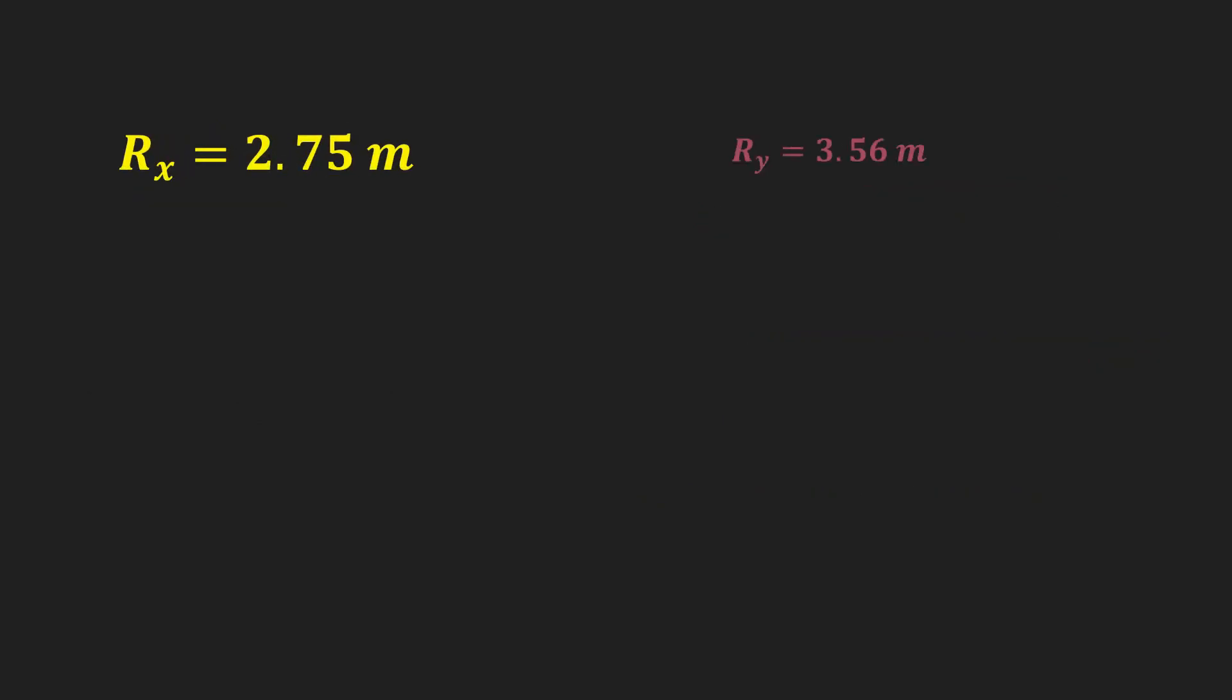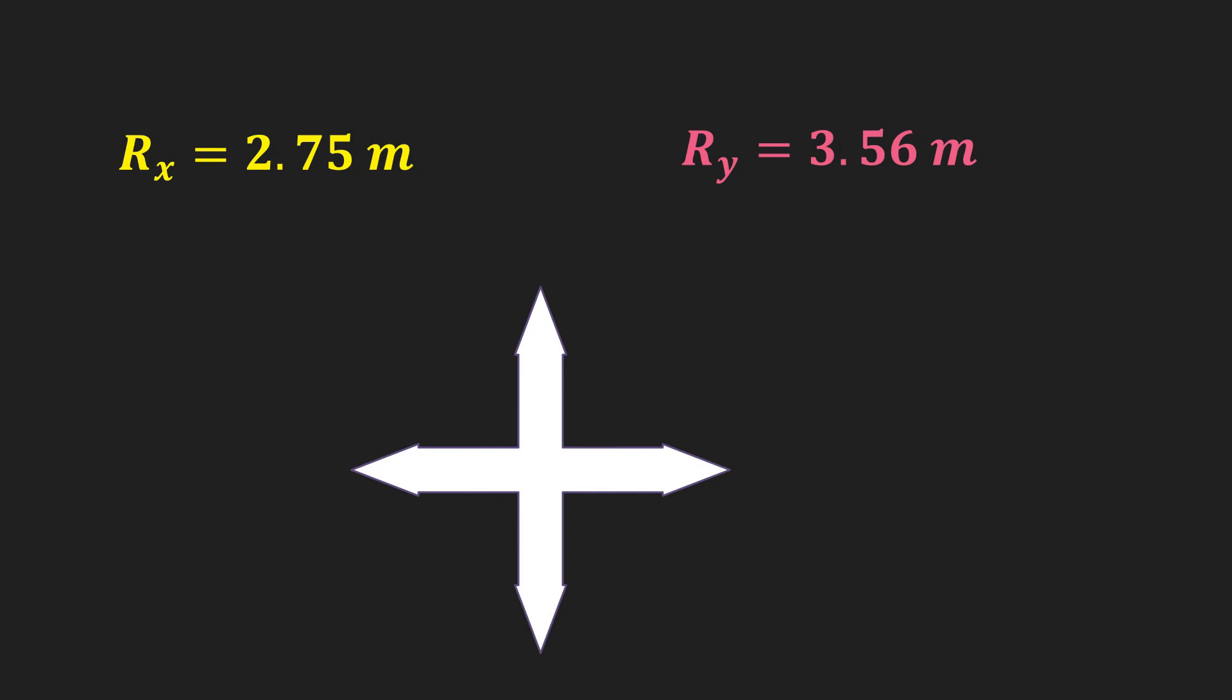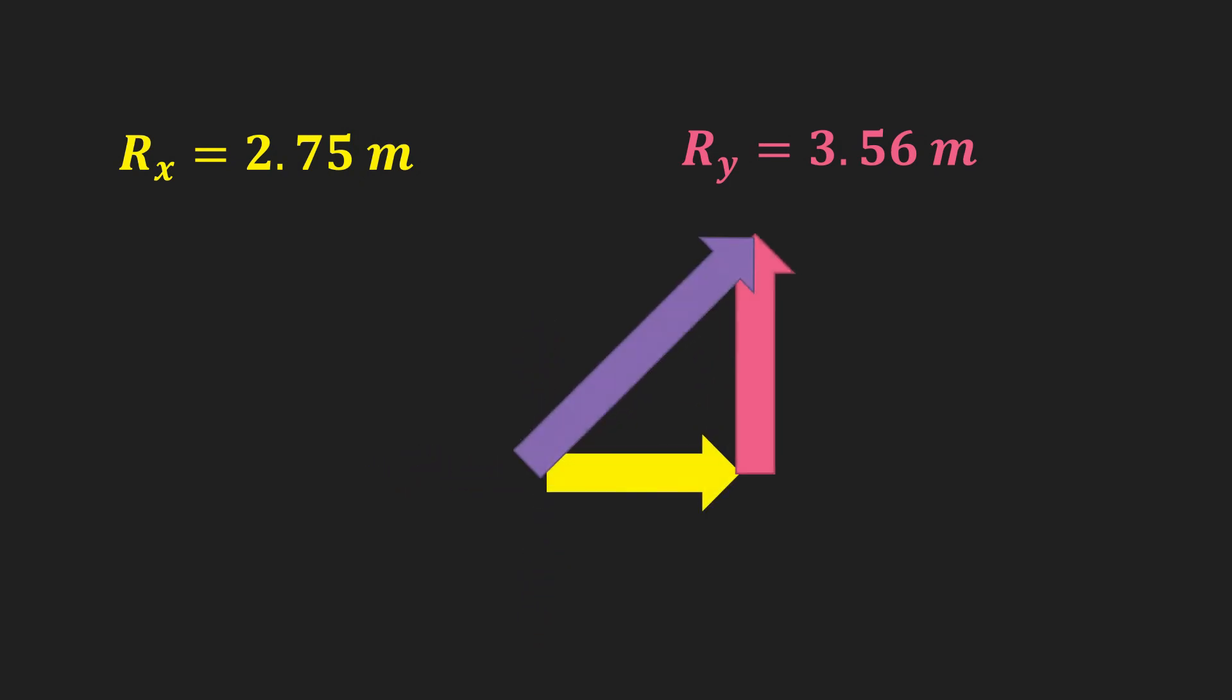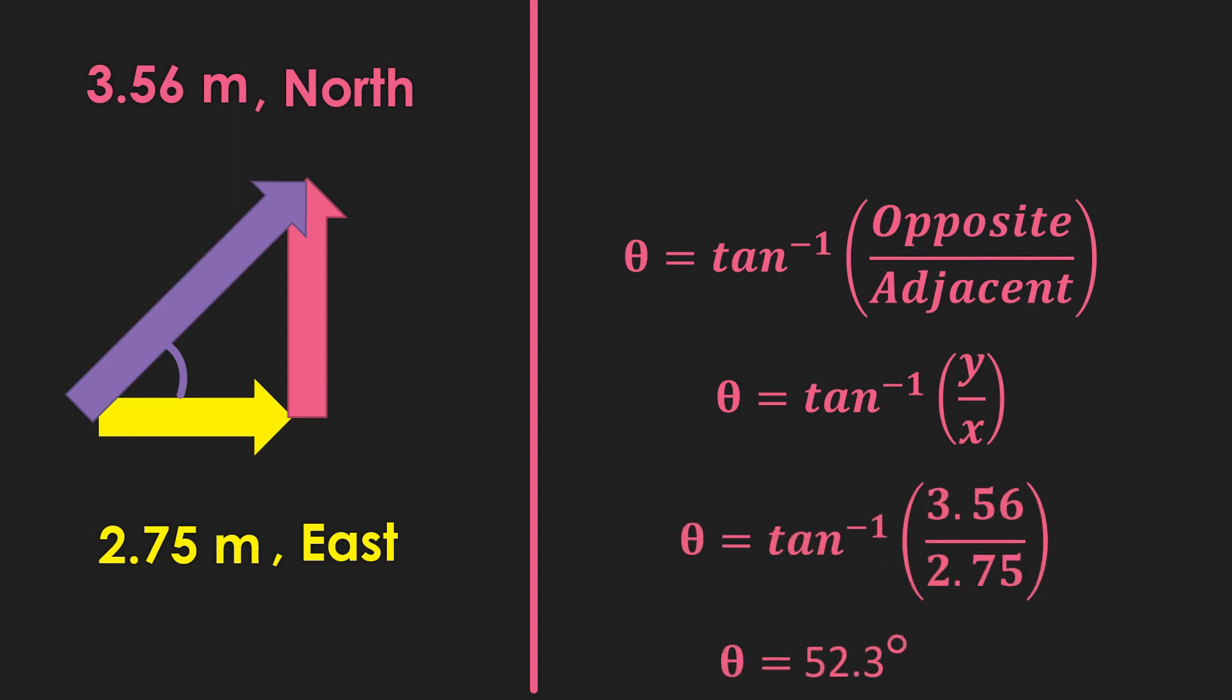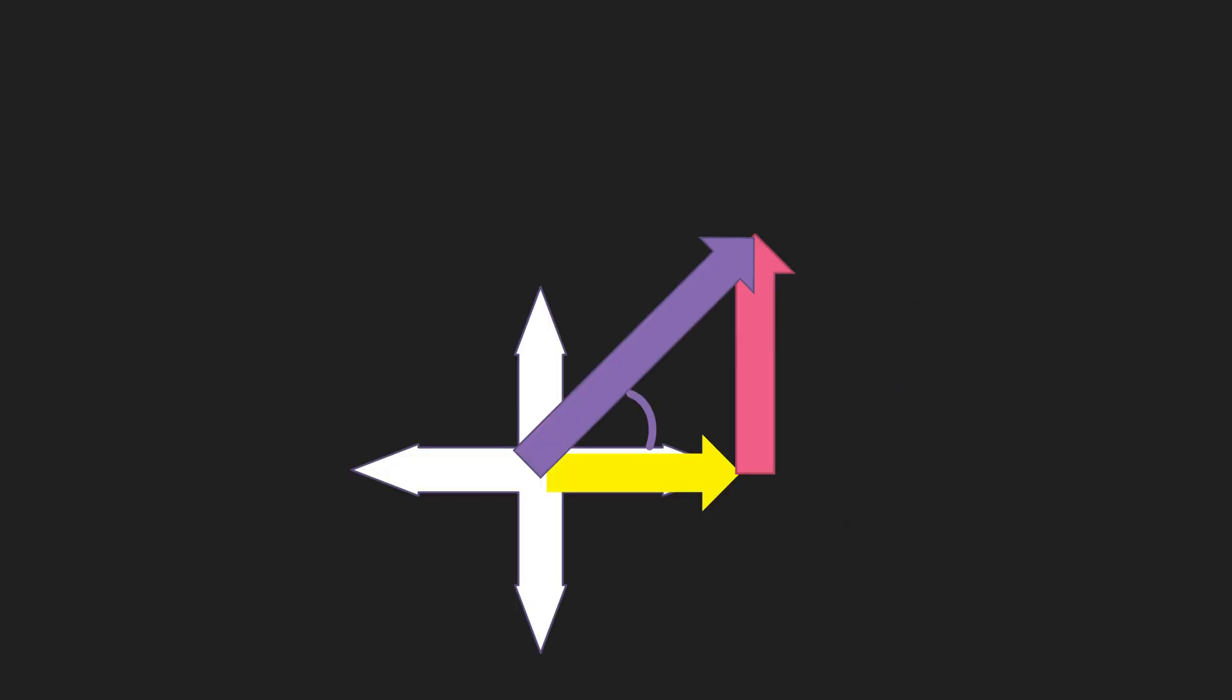By looking at the given values and direction, where can we place the angle theta? Now we use the formula for the angle theta. Determine which is the opposite side and adjacent side. Substitute the given values. So we have 52.3 degrees. So the resultant vector is 4.50 meters, 52.3 degrees north of east.